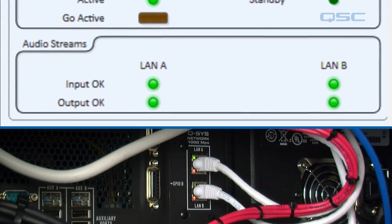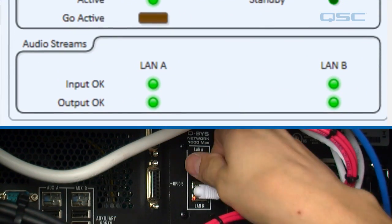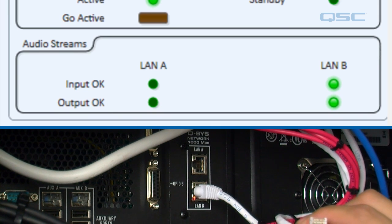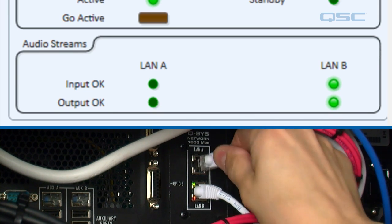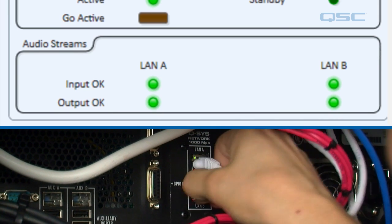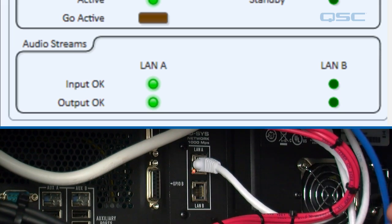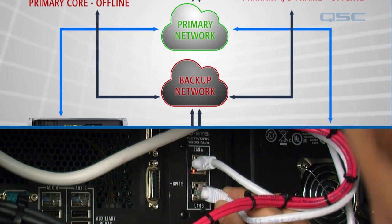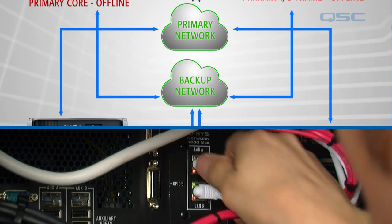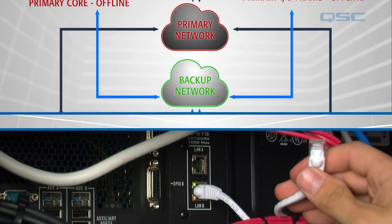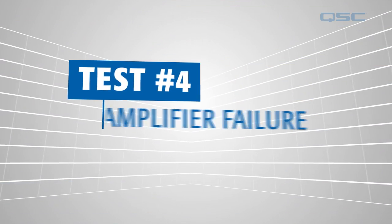We can also unplug the Ethernet cable, and because this network is redundant, you'll notice that we won't have any audio dropout as long as one cable is plugged in. We can take one out, trade one in for the other, and the audio will continue uninterrupted.